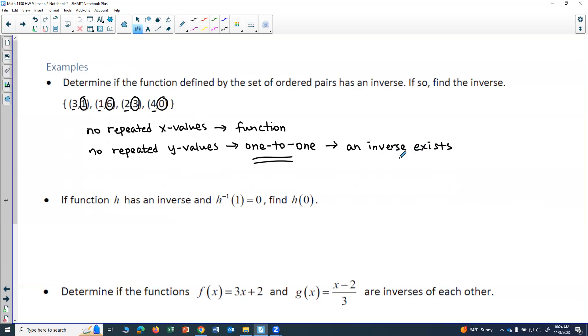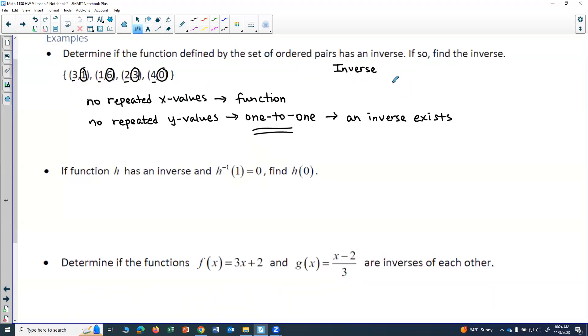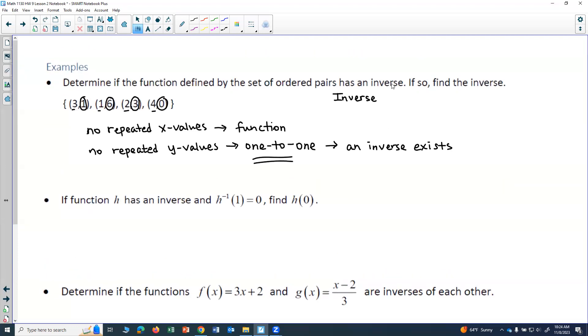And to find the inverse, I'm going to switch the x and y values. So for the inverse, I'll list it as a set of ordered pairs, just like I see for the actual defined function. And so I'm going to go ahead and put my set brackets, and what I'm going to do is switch the x's and y's. So I have the point (3,1) in my function, so I'm going to have the point (1,3) on the inverse.